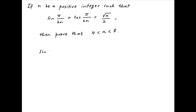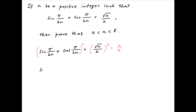We are given that sin(π/2n) + cos(π/2n) is equal to √n/2. Taking the square of both sides, we get sin²(π/2n) + cos²(π/2n) + 2·sin(π/2n)·cos(π/2n) is equal to n/4.